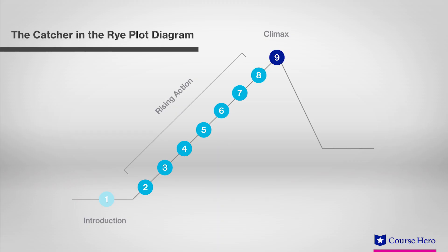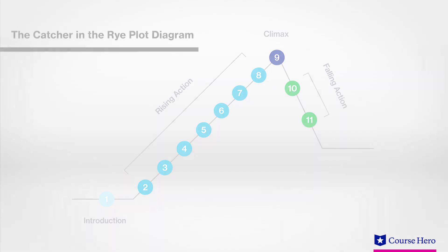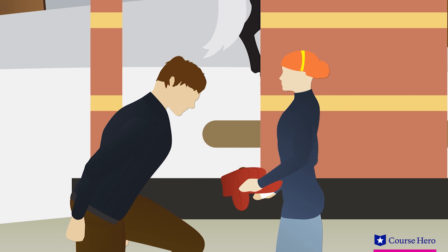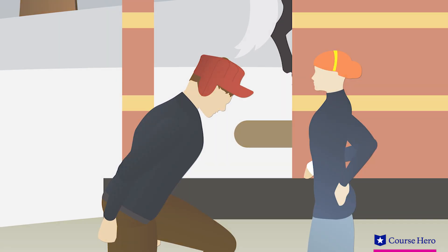The falling action of The Catcher in the Rye sees Phoebe and Holden reconcile. Phoebe kisses Holden and puts his red hat on his head, symbolic of Holden feeling welcome and protected. Holden feels happy as he watches Phoebe ride on the carousel.